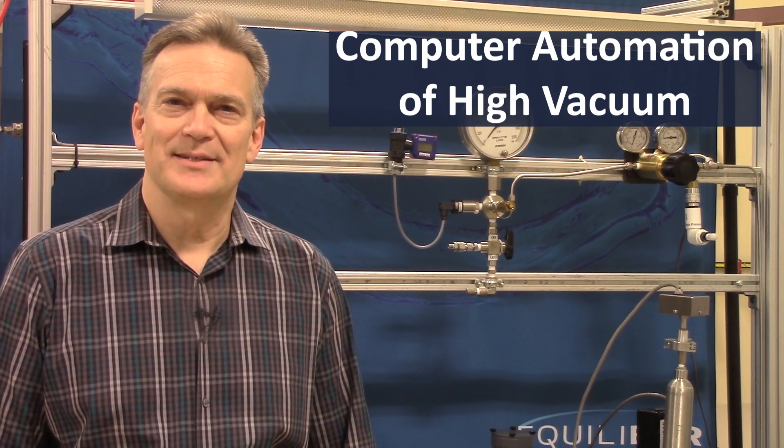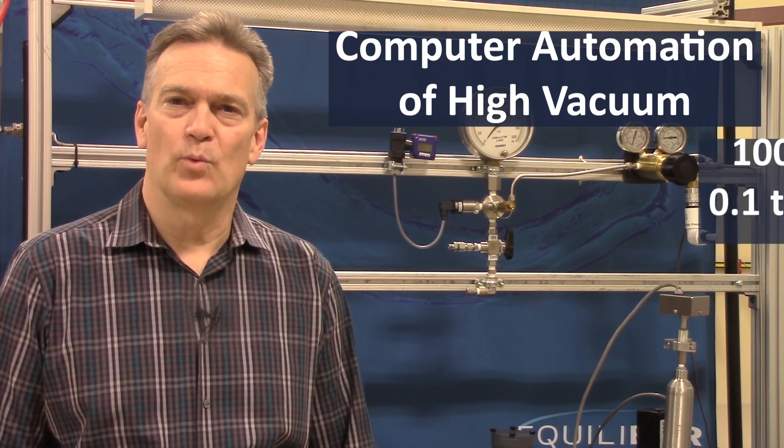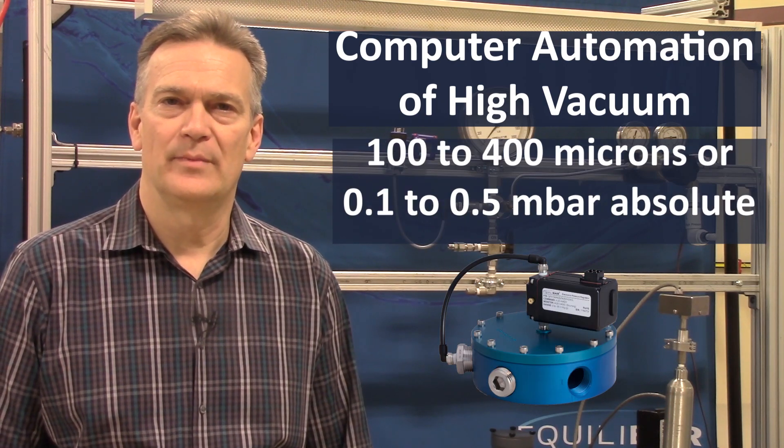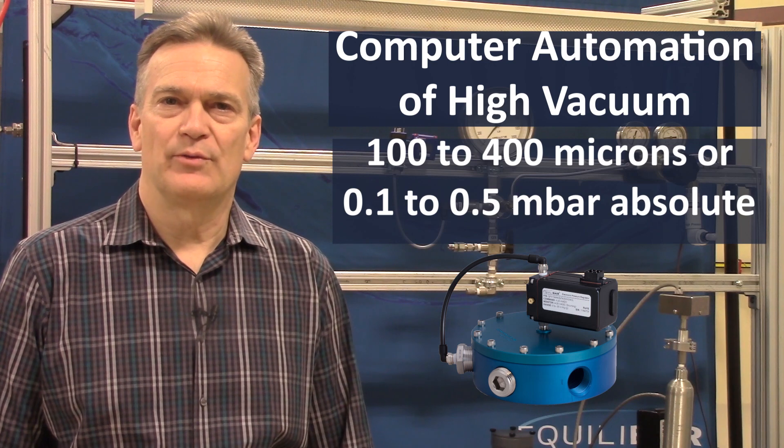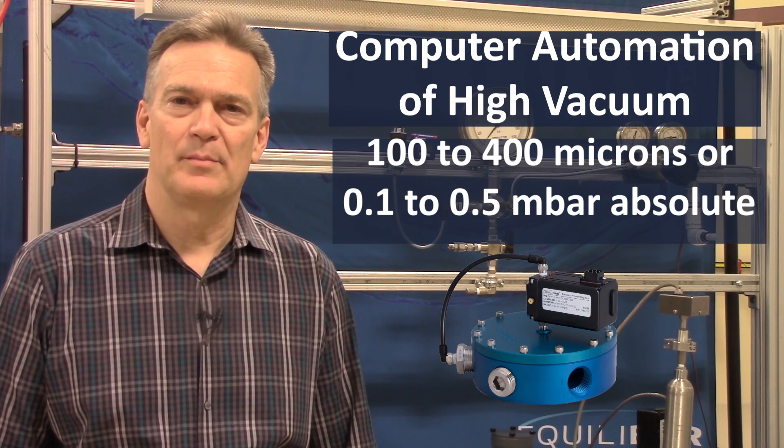Hi, my name is Jeff Jennings. This video will demonstrate computer automation of high vacuum in the range of 100 to 400 micron using an Aquilibar vacuum regulator. This type of system is useful for chemical processes such as vacuum distillation or analytical applications.